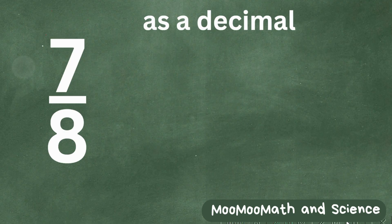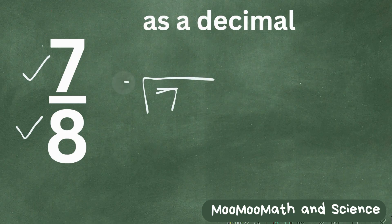What we need to do is divide the numerator by the denominator. So let's go ahead and write the 7, and we're going to divide that by 8.